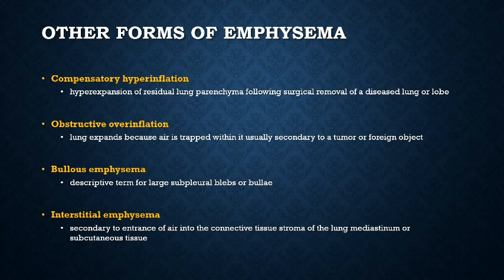Other forms of emphysema include compensatory hyperinflation, due to expansion of residual lung tissue; obstructive overinflation, secondary to air trapping, especially in obstructive cases such as a tumor or a foreign object; bullous emphysema, which is due to blebs; and interstitial emphysema, which is secondary to entrance of air into the connective tissue of the lung or from the subcutaneous tissue.